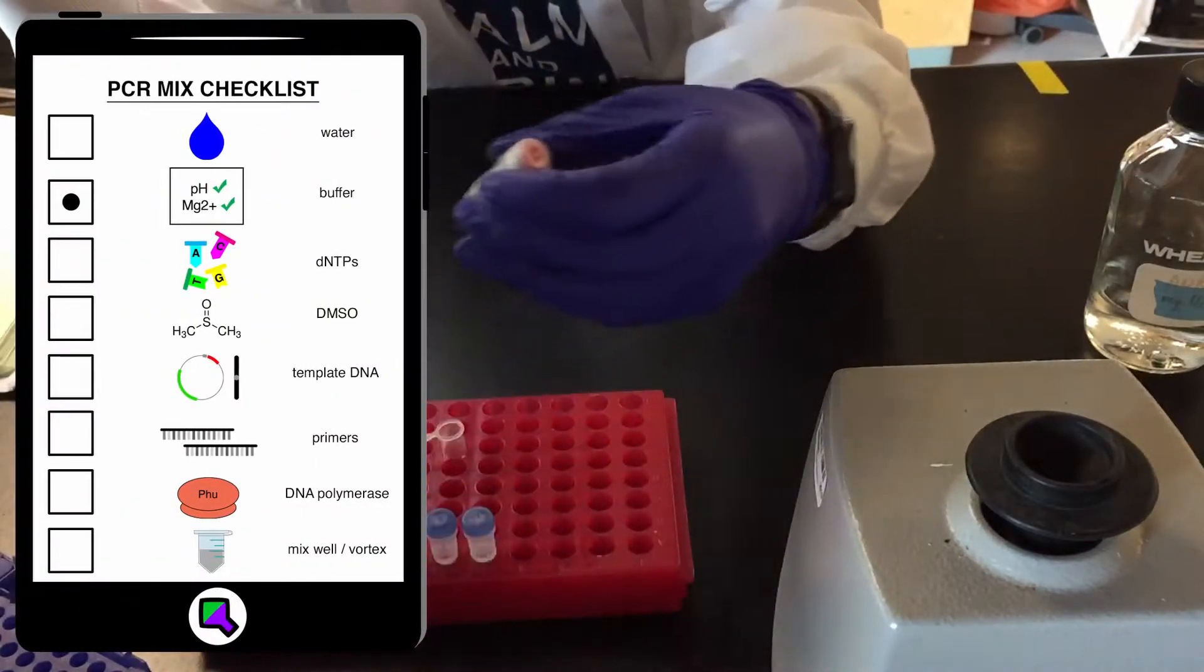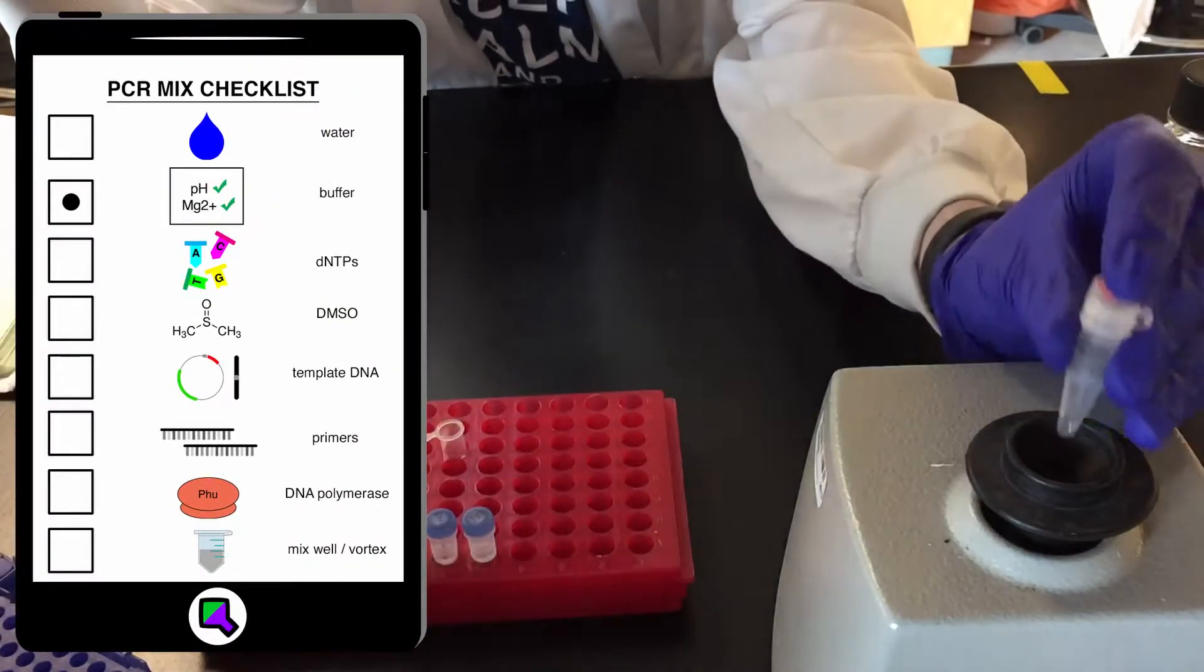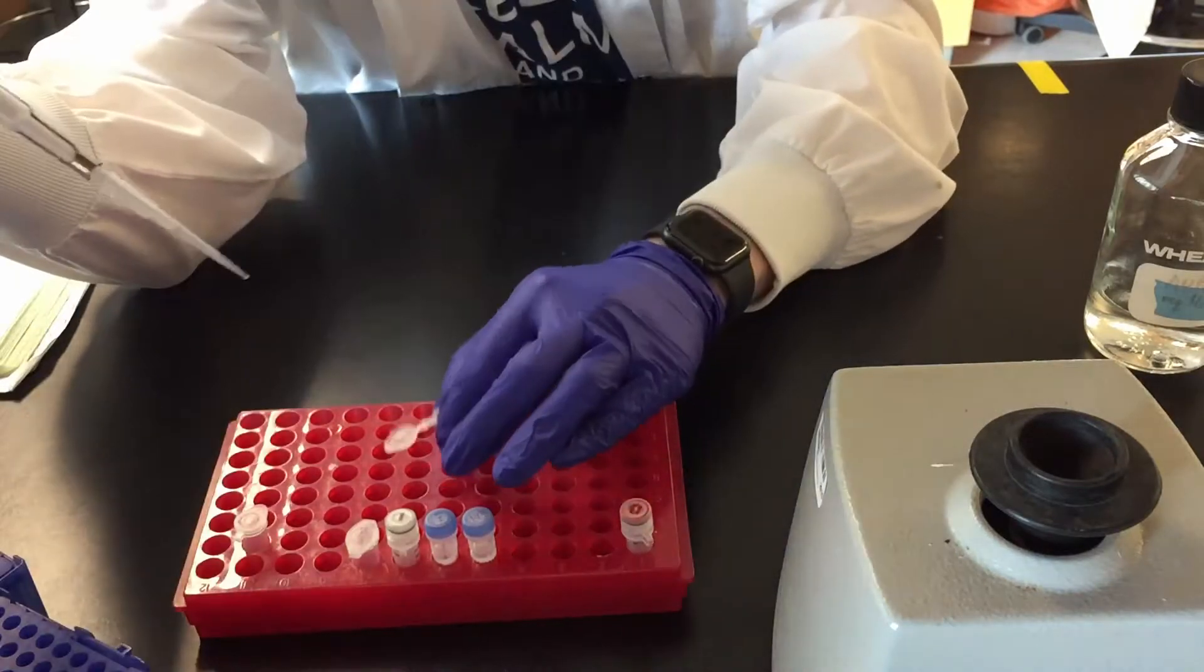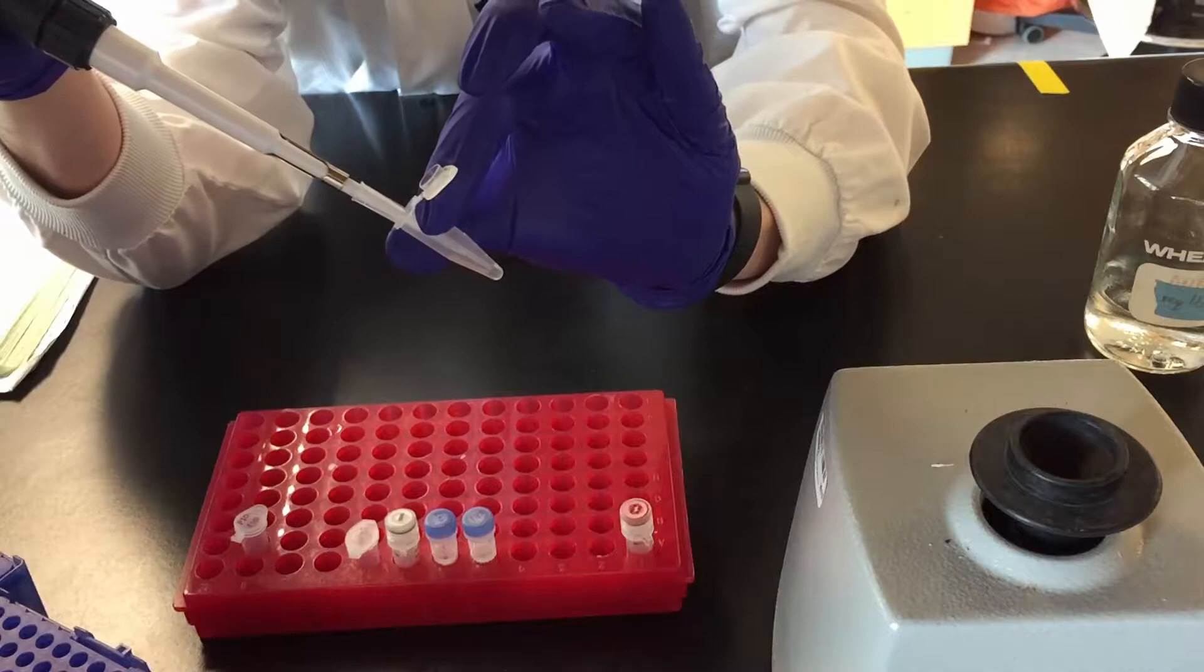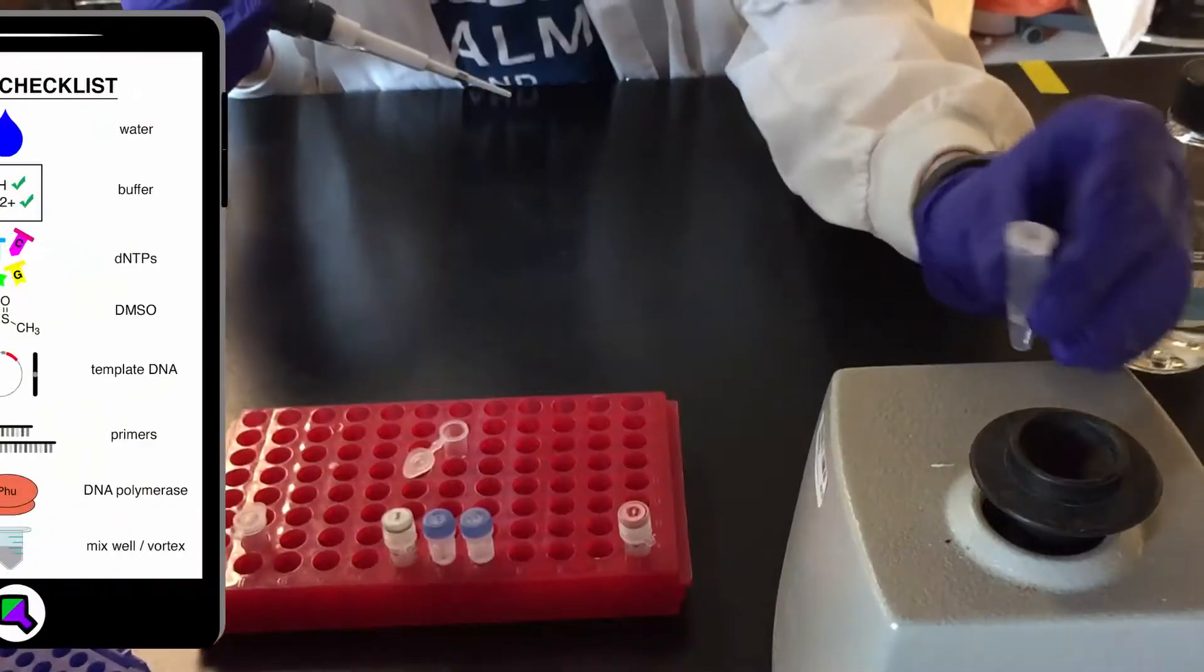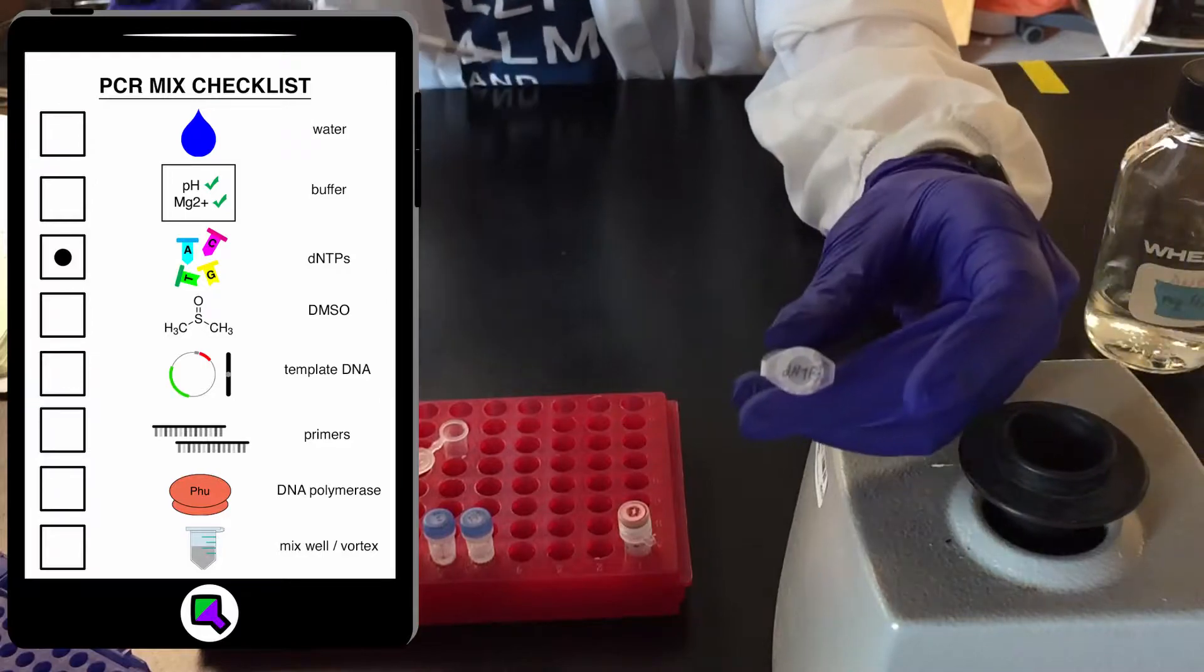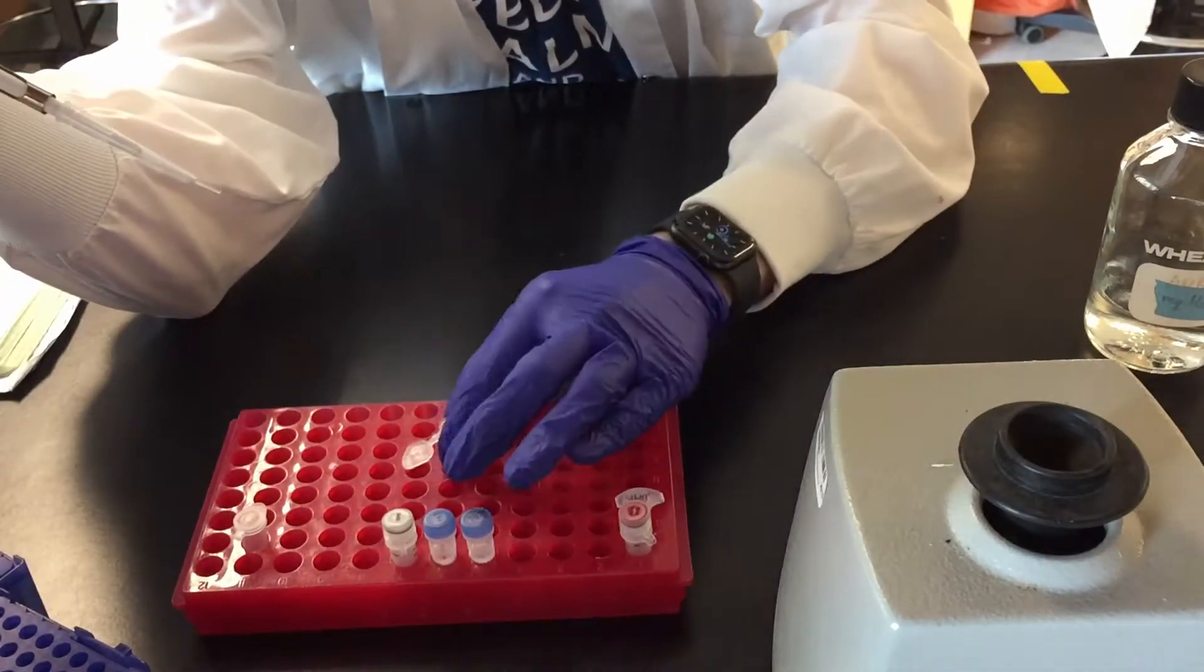Next we add the buffer which controls for pH and usually provides magnesium which is a cofactor for polymerase. DNTPs are pre-mixed building blocks of DNA: adenine, cytosine, thymine, and guanine.